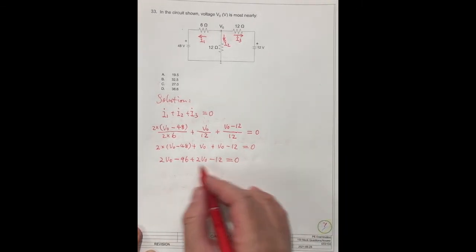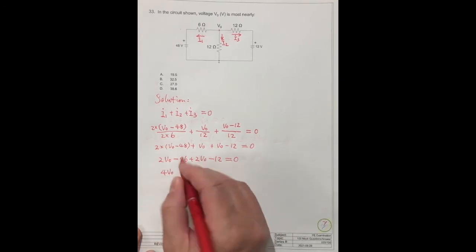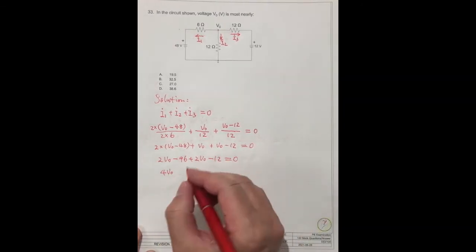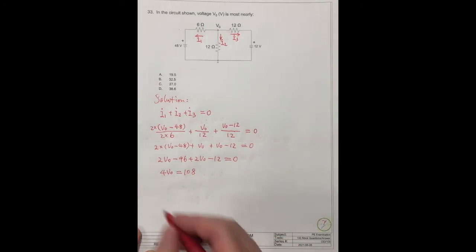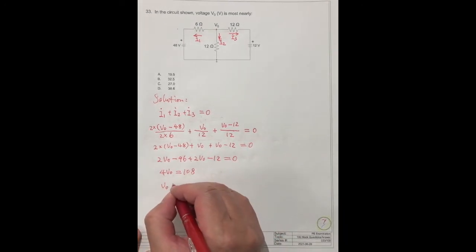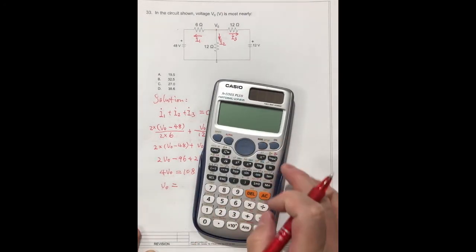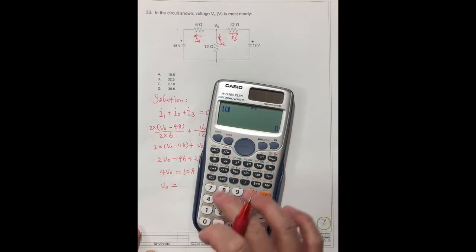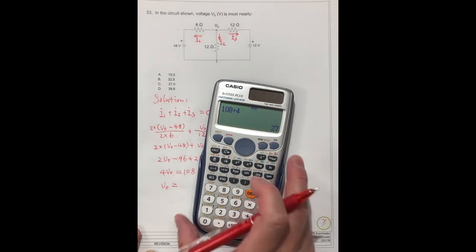We can simplify this. This is 2, 2, is 4V0. Move both to this side, equal to 108. So V0 is equal to 108 divided by 4, is 27.